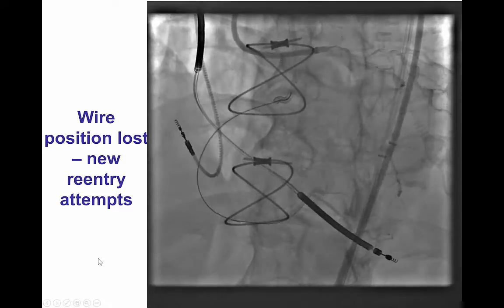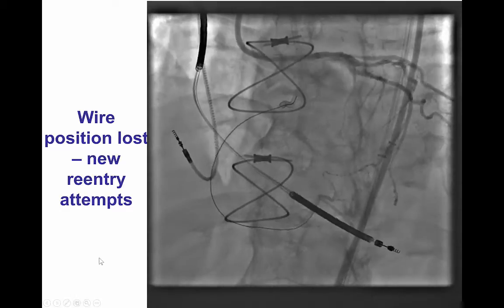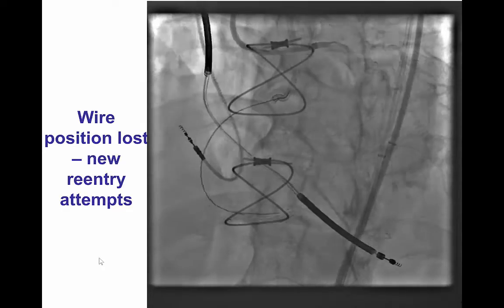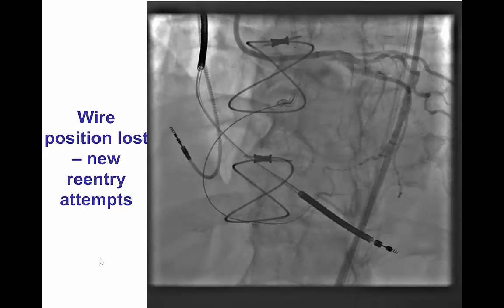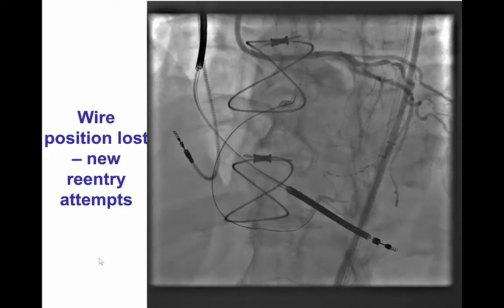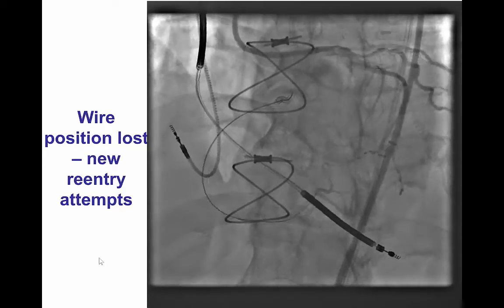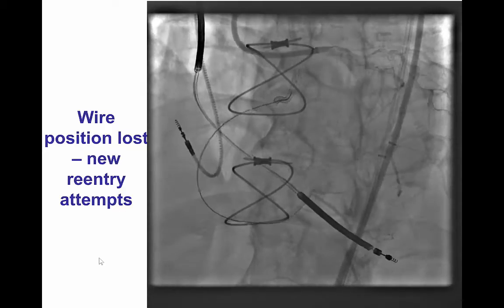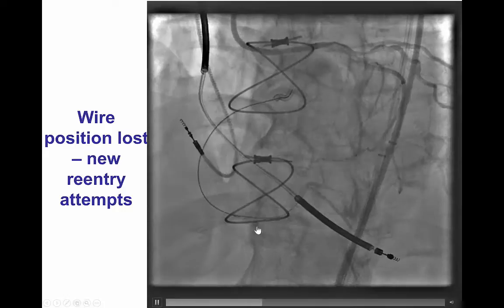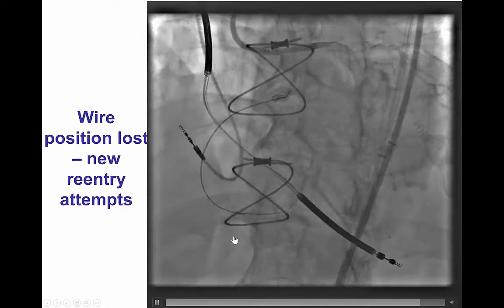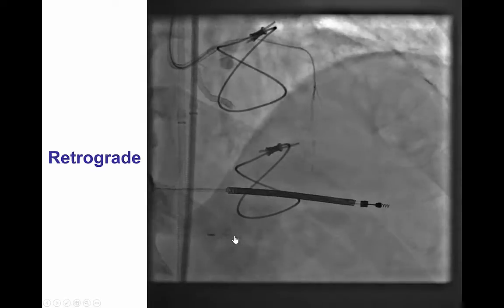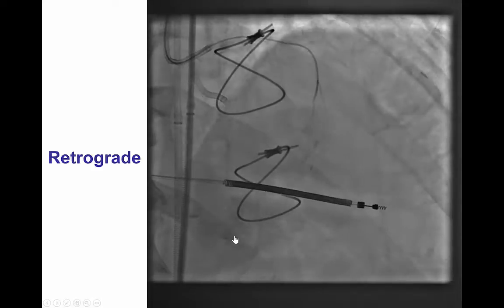However, unfortunately, during attempts to remove the Stingray balloon, we lost wire position, which is a significant problem, because we then had significant difficulty re-entering. The patient was now developing a subintimal hematoma in the distal right coronary, which made re-entry very hard. After multiple attempts, we were actually unable to re-enter.